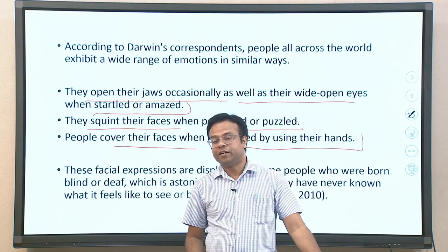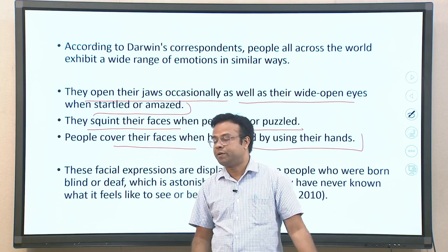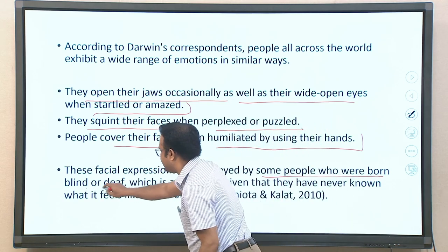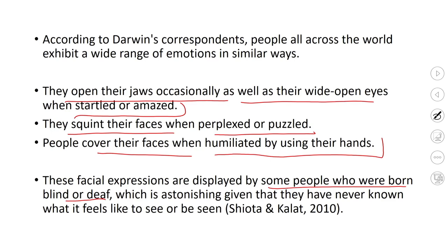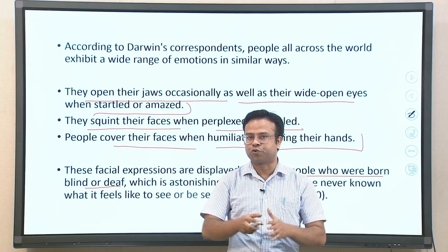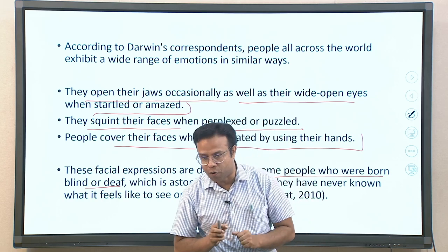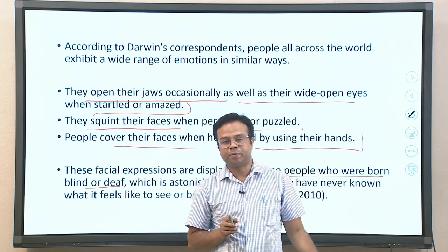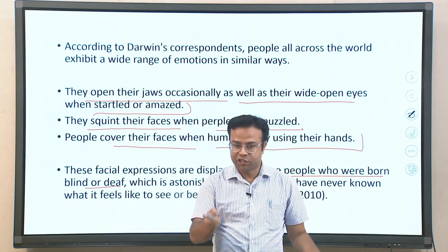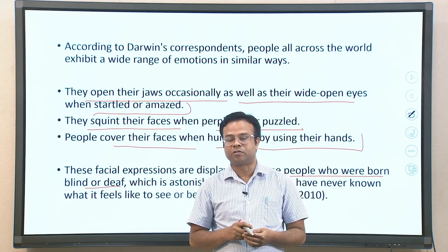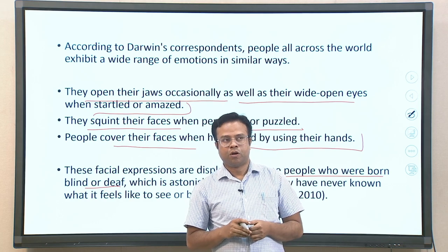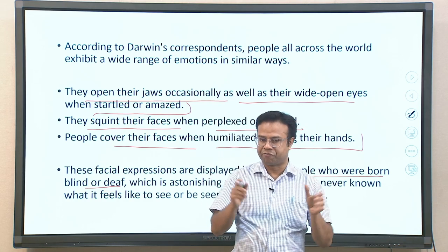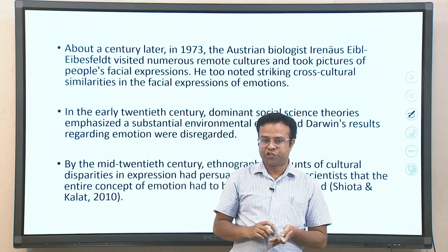Interestingly, Darwin also found that these facial expressions are displayed by some people who were born blind and deaf. This is remarkable because if somebody is born blind and deaf, they could not have learned by mimicking others' expressions. Even people who are blind and deaf from birth display these facial expressions, which suggests that this is something biologically hardwired.